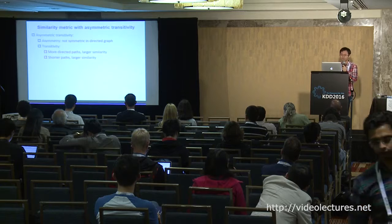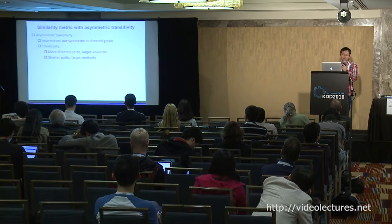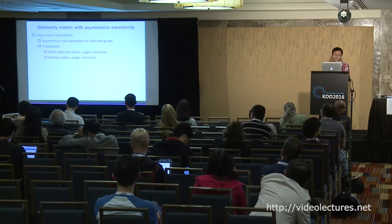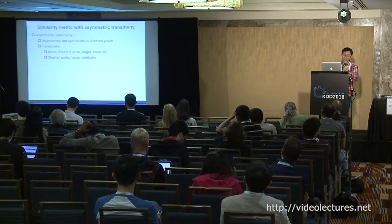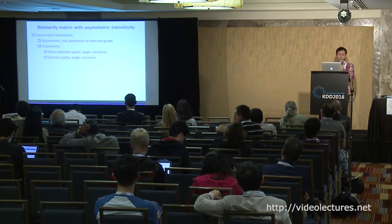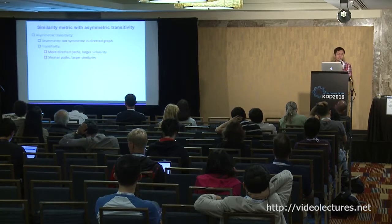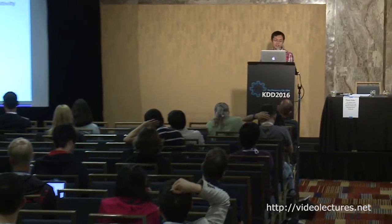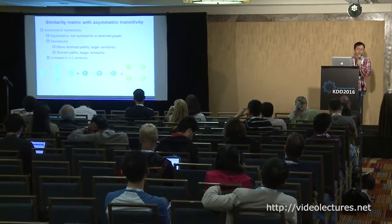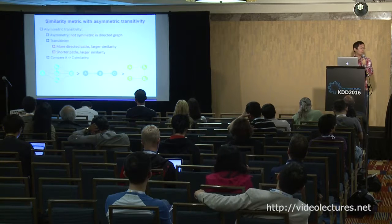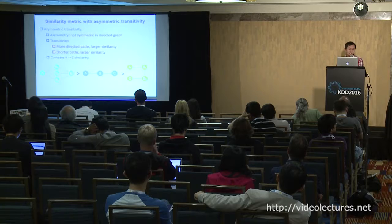Intuitively we want to find a new similarity metric to account for asymmetric transitivity. The key properties are: first, asymmetry — it is not symmetric in directed graphs. Then we describe transitivity in two parts: if there are more directed paths from one node to another, their similarity is larger; and if the paths are shorter, the similarity is larger. For example, comparing the green and blue cases, the green has larger similarity because there are more paths; comparing the blue and yellow, the blue has larger similarity because the path is shorter.